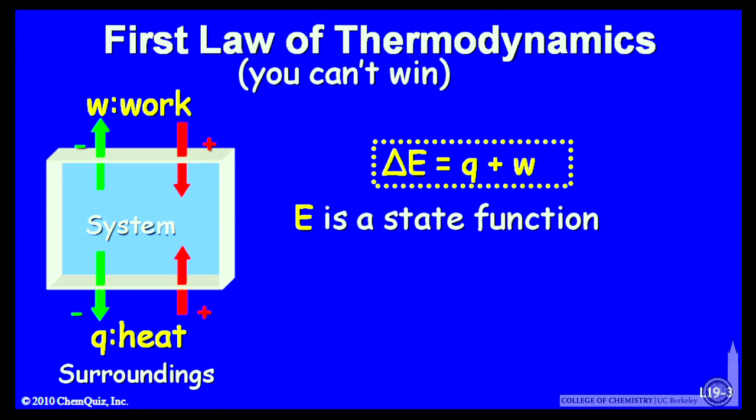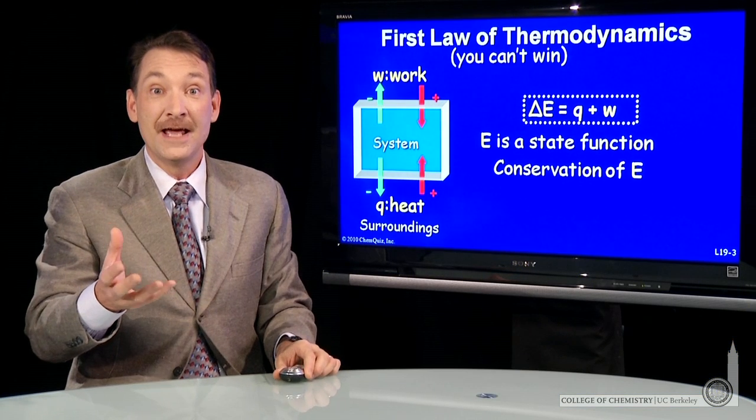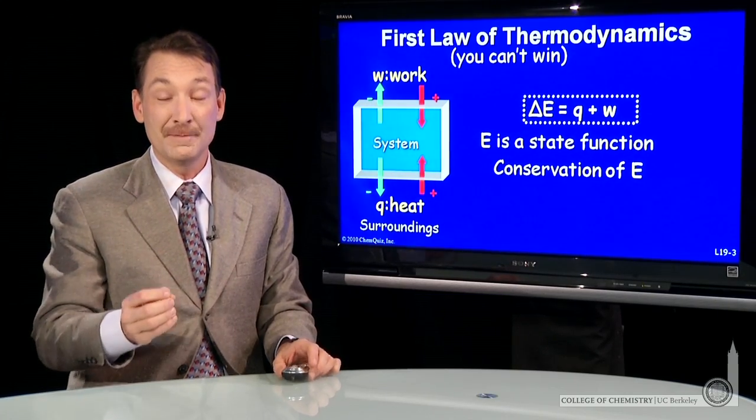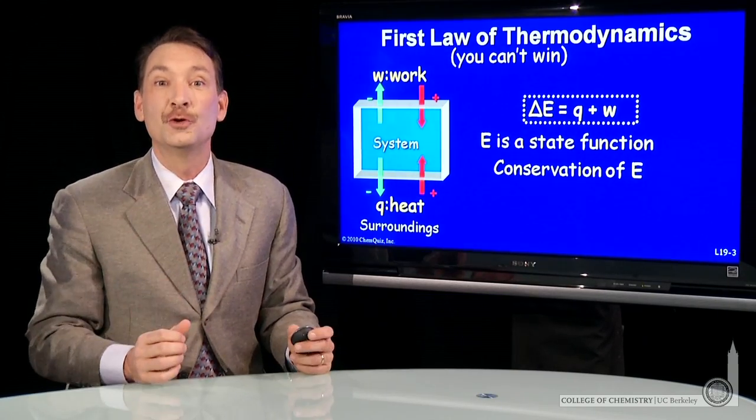So this energy that we're talking about has two important properties. It's a state function and it's conserved. By conserved, we mean energy isn't lost or created. If it goes from the system to the surroundings, it goes joule for joule.